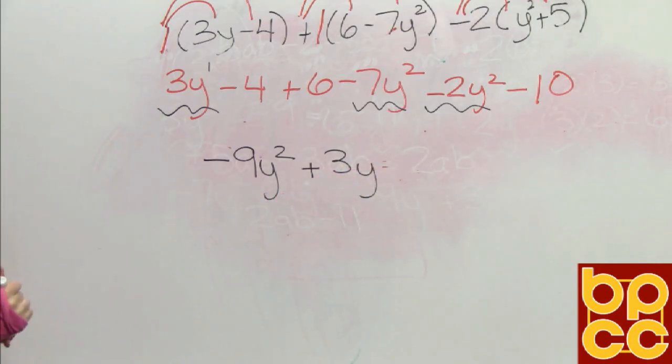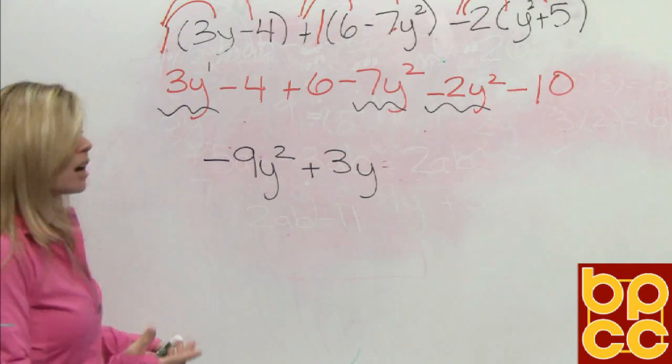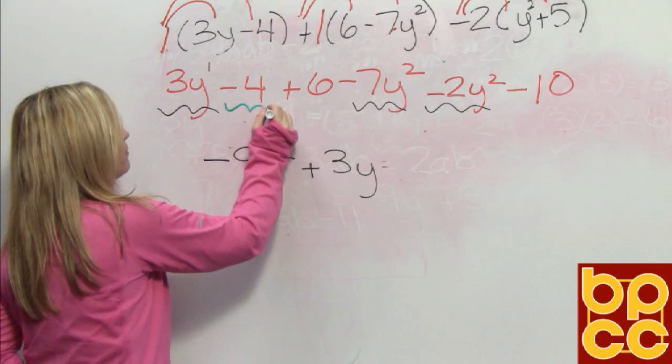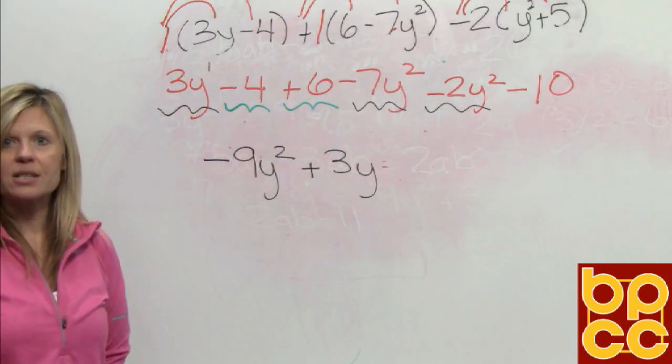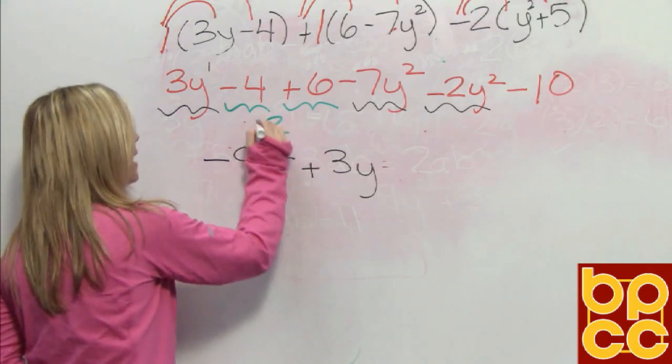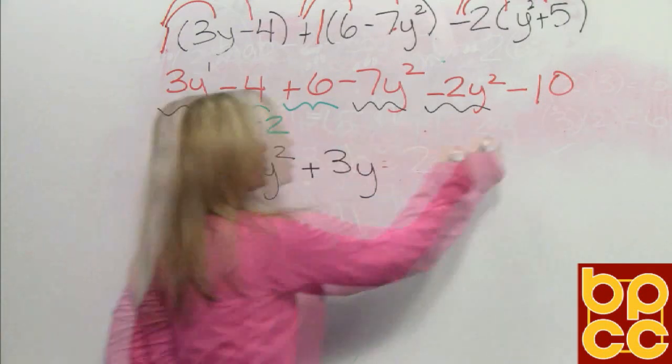The last thing we would put together are the constants, the numbers that stand alone. So if you look, we have negative 4 plus 6. They're opposite signs. We would subtract, give the sign of the larger. That would be positive 2. We have positive 2 and negative 10.